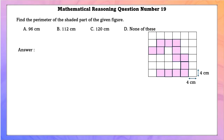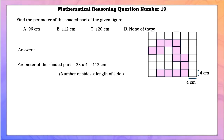Mathematical reasoning question number 19. Find the perimeter of the shaded part of the given figure. Perimeter = 28 sides × 4 cm per side = 112 cm.